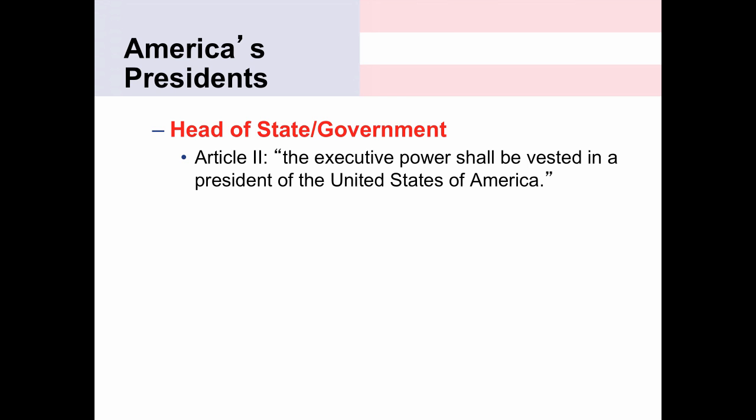Article II says the executive power shall be vested in a president of the United States of America, but it doesn't really define what executive powers are. It does not have the same sort of laundry list of powers given to the president as was given to Congress. Article I, Section II has a very long list of powers—the things Congress is allowed to do.